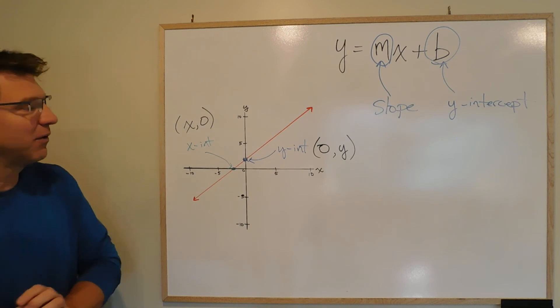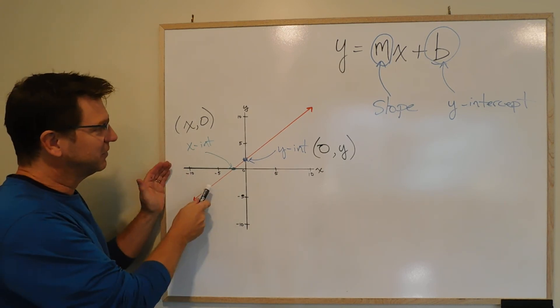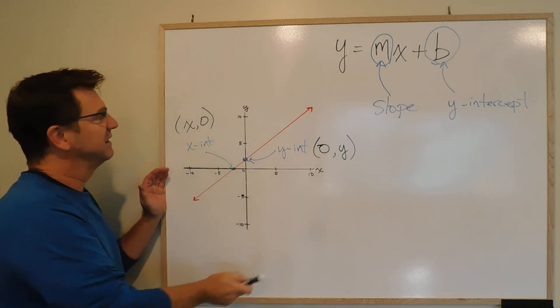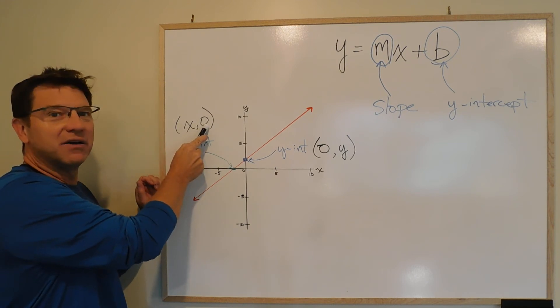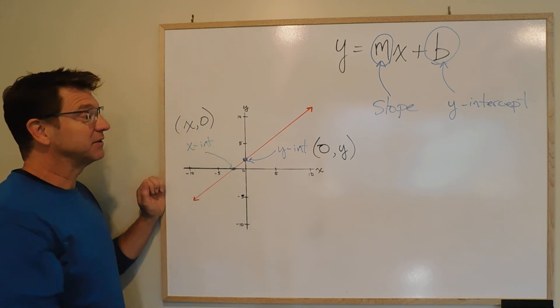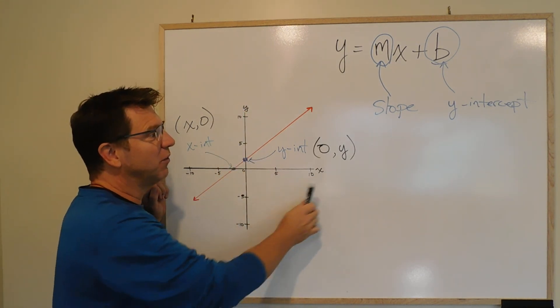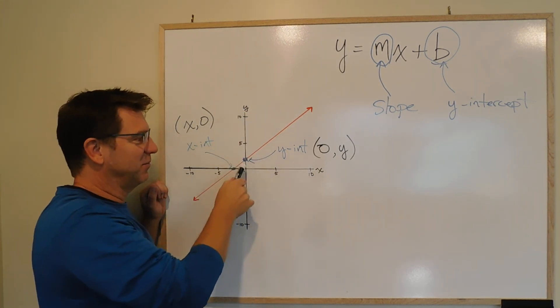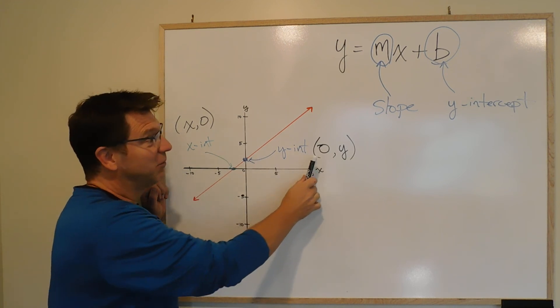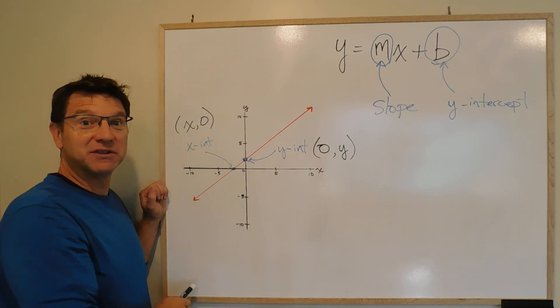And that's what this is talking about here. X-intercepts occur on the x-axis, have a 0 y-value, no matter what the x-value is. Y-intercepts occur on the y-axis. We don't know what the y-value is, because it depends where it might be on a given line. But we know that the x-value is always 0.